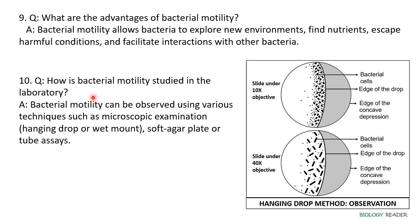How is bacterial motility studied in laboratories? Bacterial motility can be observed using two different techniques. The first is microscopic examination, where we do a hanging drop or wet mount. The second is soft agar plate or tube assay. You adjust your slide on 10x and then observe on 40x. You observe the edge of the hanging drop, the bacterial cells, and the edge of the concave depression. For more detail on the practical procedure for bacterial motility testing, watch the related video on my channel.